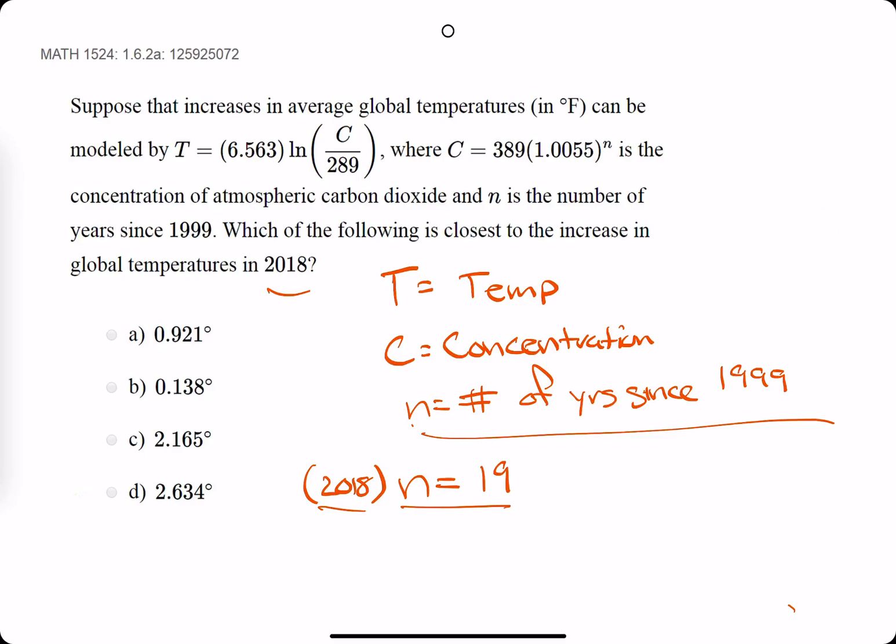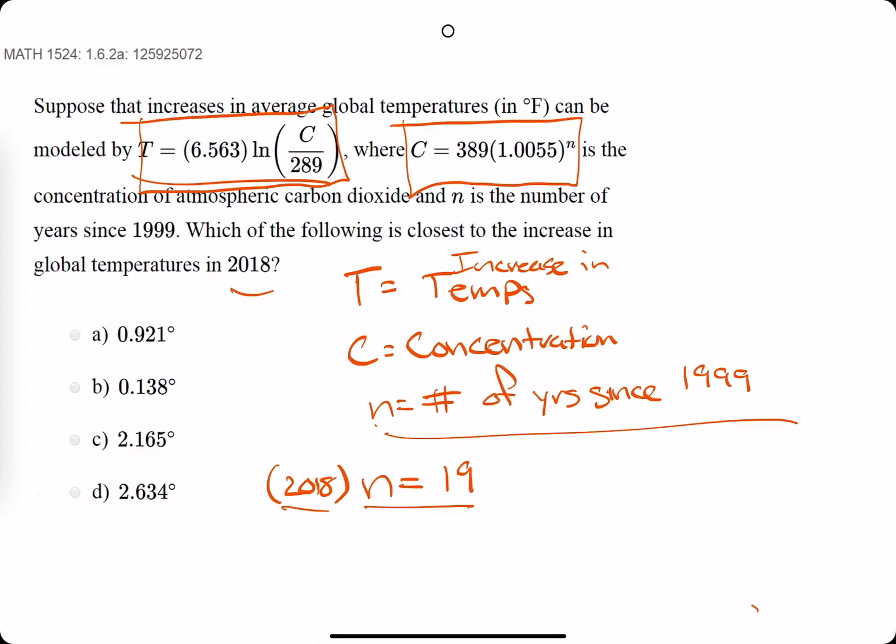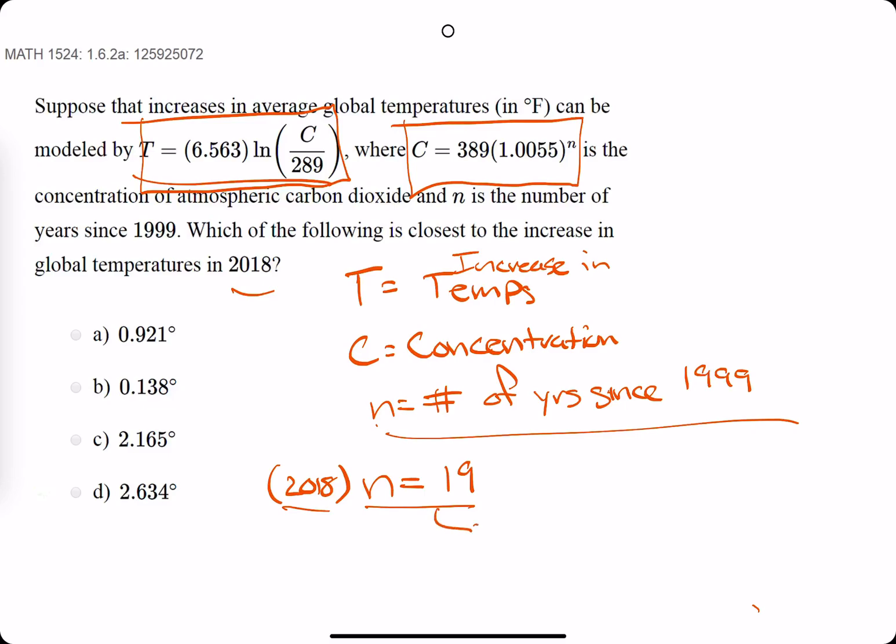We want to identify what's the increase in global temps. So the increase in global temps is given by our T value. So we want to find what T is when N is 19, but there's nowhere to plug N in the equation T. So there is a C though. So if we look at C's equation, there is a place to plug in N. So it's sort of a transitive process here. So what we'll do is plug in N equals 19 into the function C.